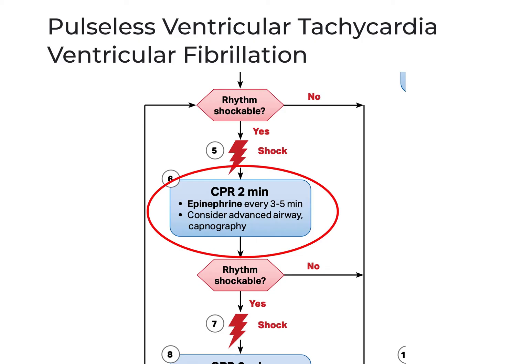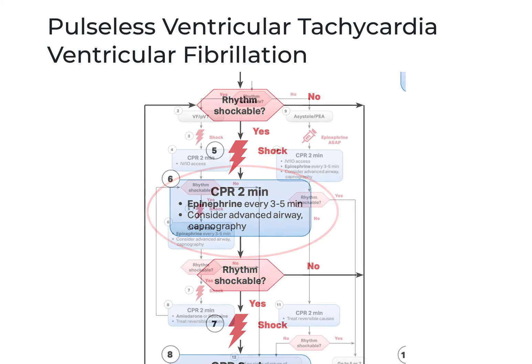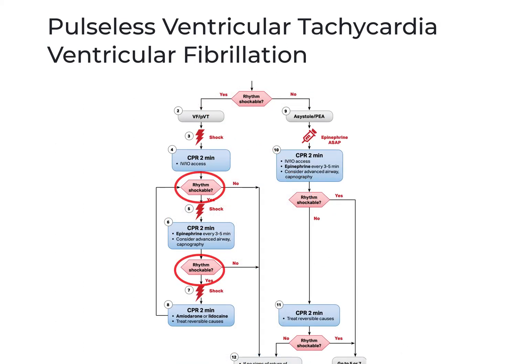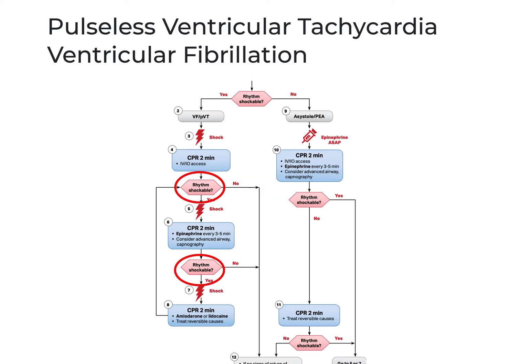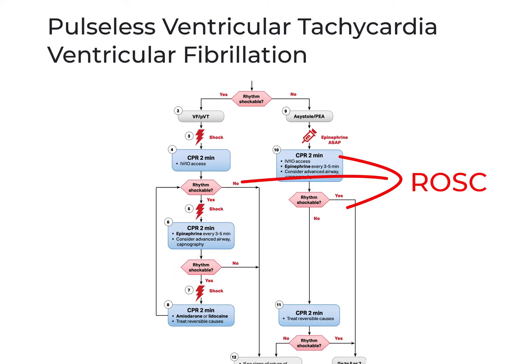If at any of these assessment points you discover that your patient is no longer in a shockable rhythm but still in cardiac arrest, we move to the other side of the cardiac arrest algorithm, which I will cover in part two. If at any point we determine that our patient has a return of spontaneous circulation, or ROSC, we go to the ROSC algorithm, designed to help us keep that positive outcome.